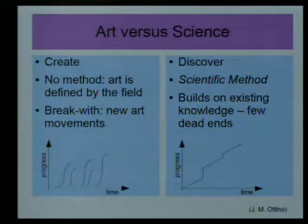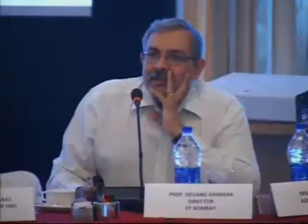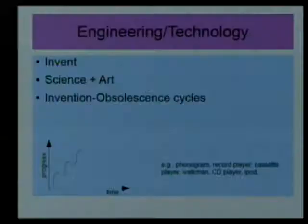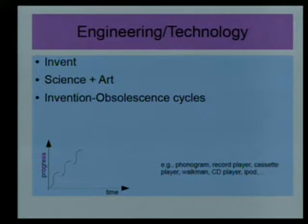If you look at art, the key word there is 'create', whereas in science the key word is 'discover'. In both of these fields, the kind of evolution of progress is very different. Then if you look at engineering and technology, that is again somewhat different, and the key word there might be 'invent', because engineers create things like TVs or tape recorders. One can think of that as a sort of combination of science and art.